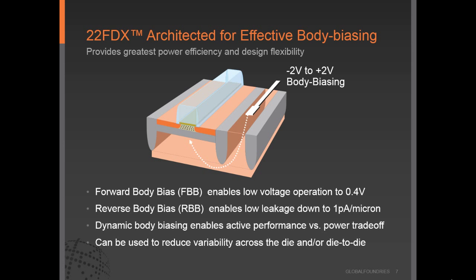One of the most differentiated features of the 22FDX platform is that it is architected for effective body biasing, and at Global Foundries we are extracting the maximum potential out of these capabilities. Forward body biasing can be used to enable ultra-low voltage or low power operation, even down to 0.4 volts. The ability to do reverse body biasing is being enabled to achieve the lowest leakage devices down to one pico-amp per micron. Body biasing can be done both dynamically and statically with libraries characterized for PVT and body bias corners. There are also novel uses such as process compensation to minimize variability or as an alternative to voltage overdrive to improve performance without reliability and active power penalties.